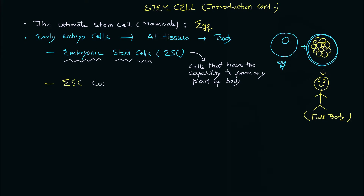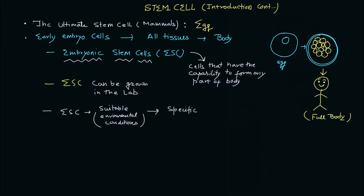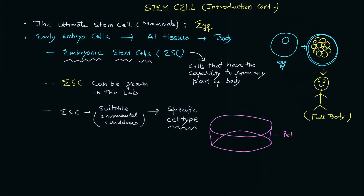An important aspect of ESCs is that they can be grown in the lab. You can grow these cells, experiment with them, and because of that we were able to find amazing answers to biological questions. The important part is you can provide suitable environmental conditions and then convert these cells into a specific cell type. This is a type of cell culture plate that you can use to grow cells.